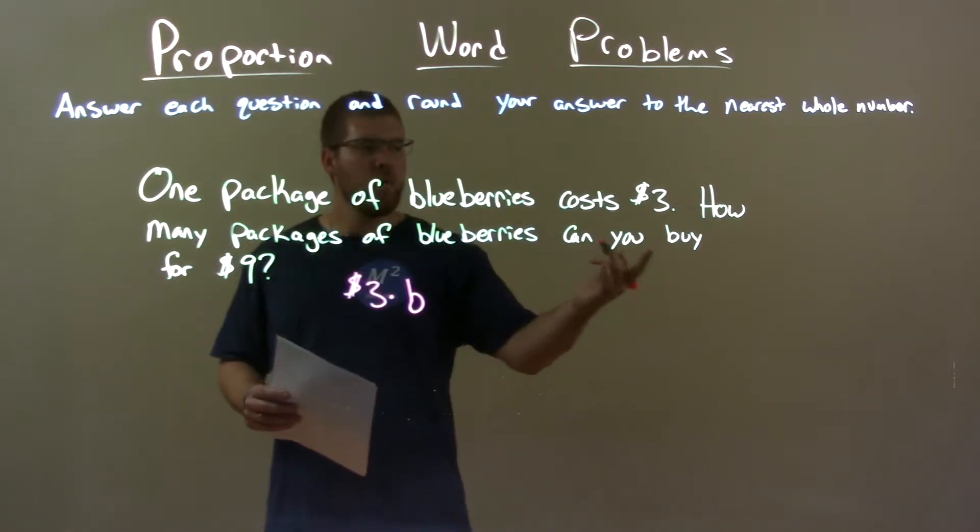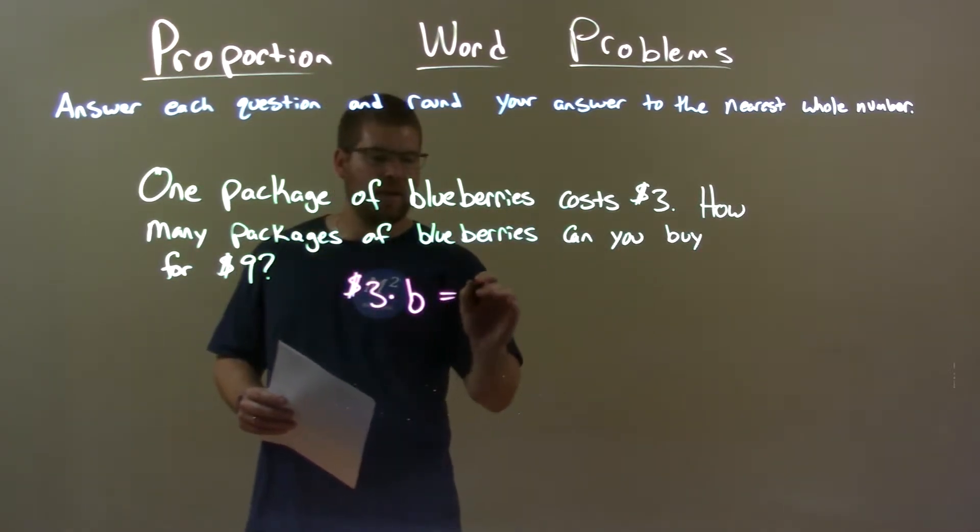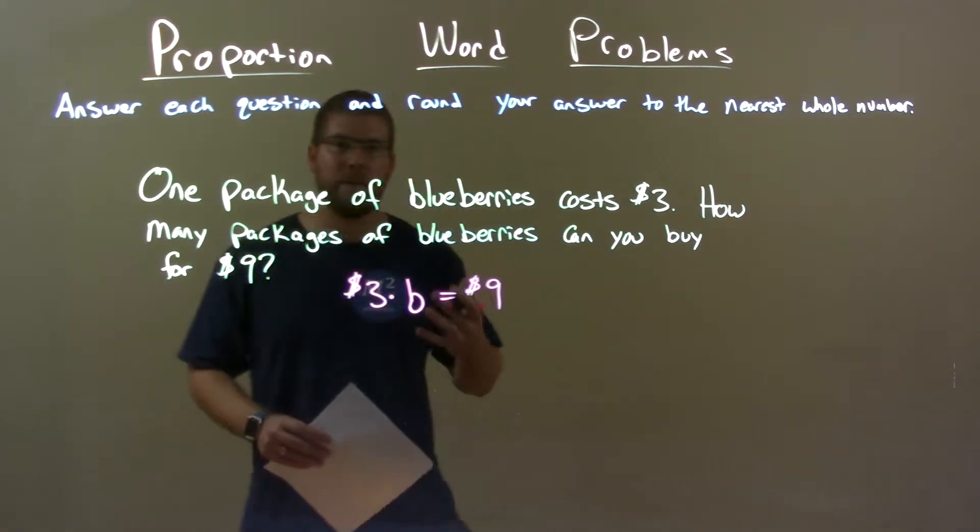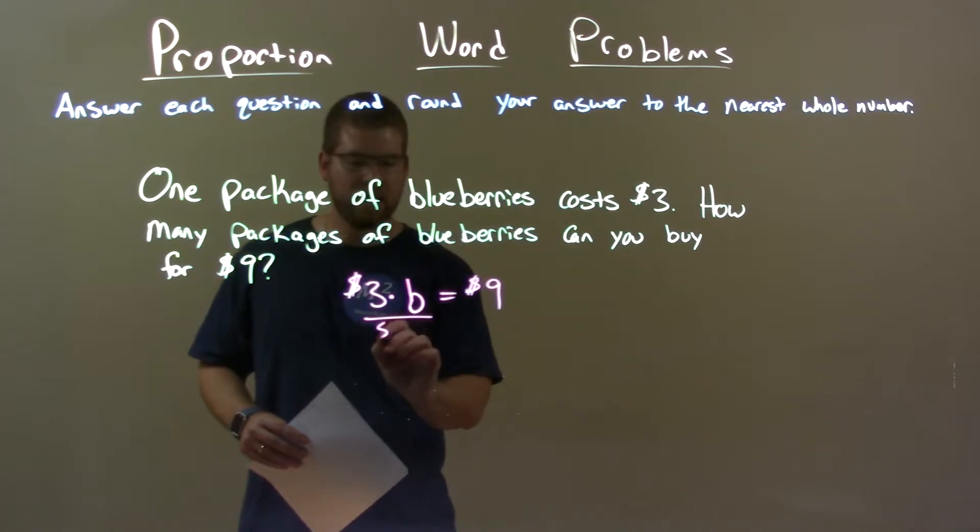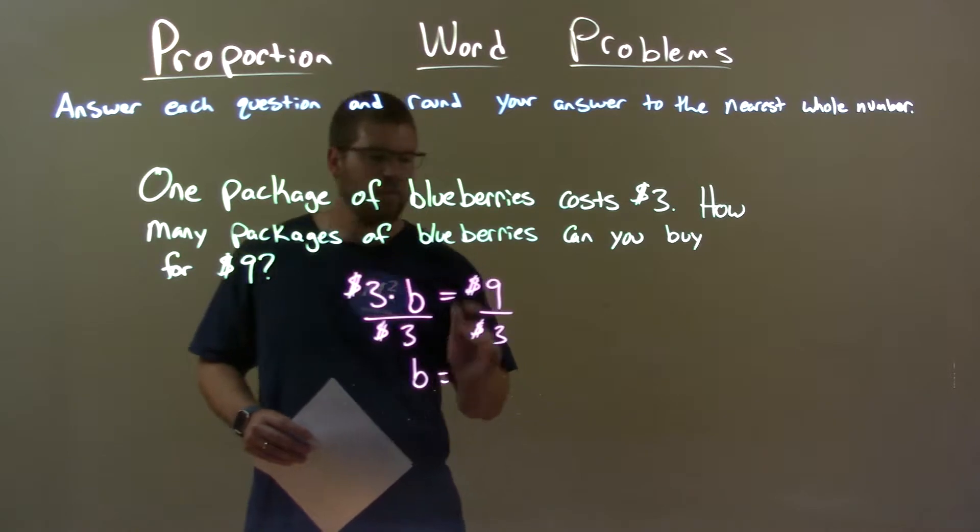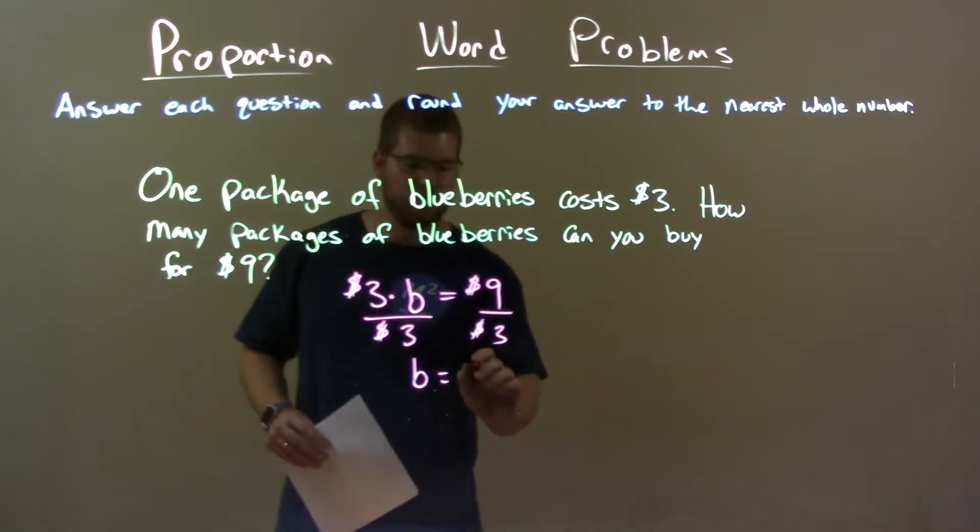We want to see how much we can get for $9, so we set that equal to our $9 and let's solve for the letter B. Divide both sides by $3.